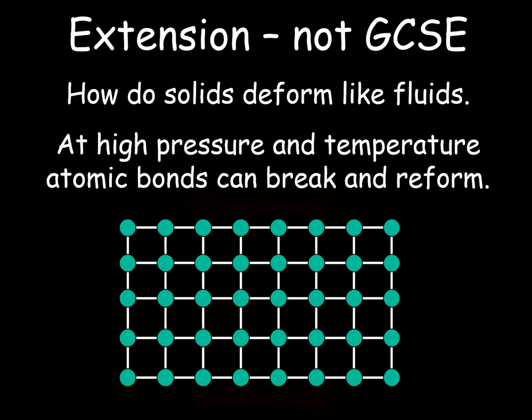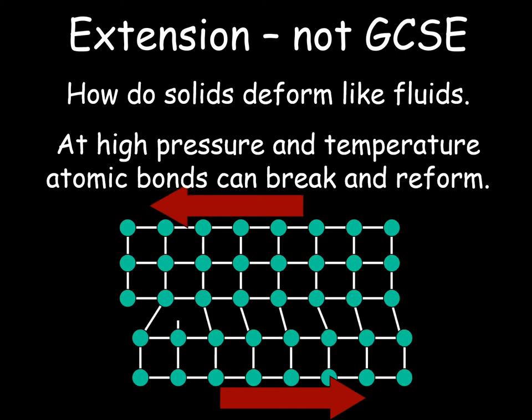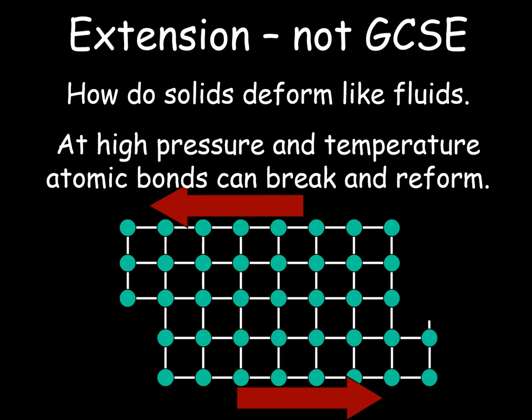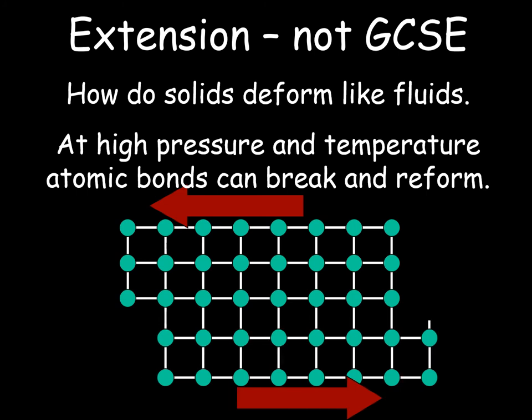If you want to know how the mantle can possibly flow, here's a picture of a crystalline structure. We've got covalent bonds here between crystals. As we apply massive forces and high temperature, we break one bond, and those atoms start to migrate their bonds to the next atom. It's not like a liquid flowing — it's just regrowing new chemical bonds.